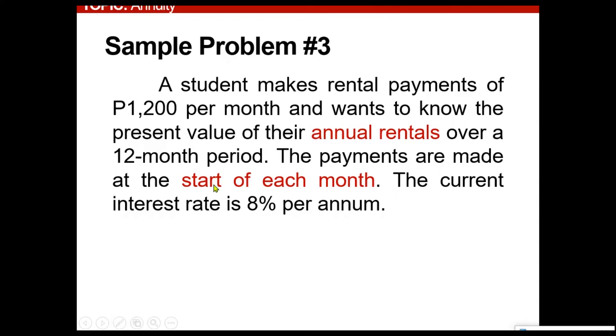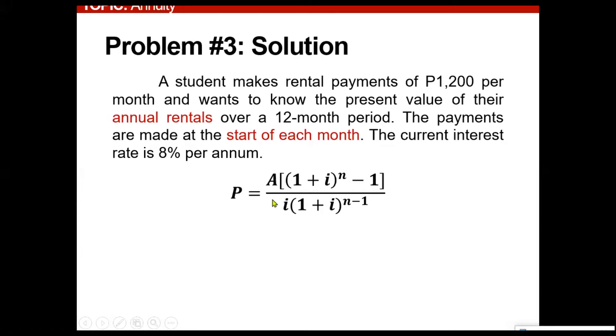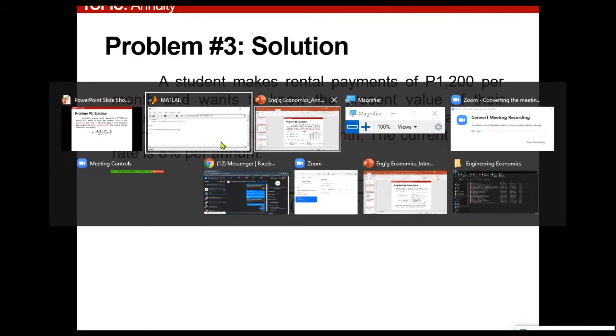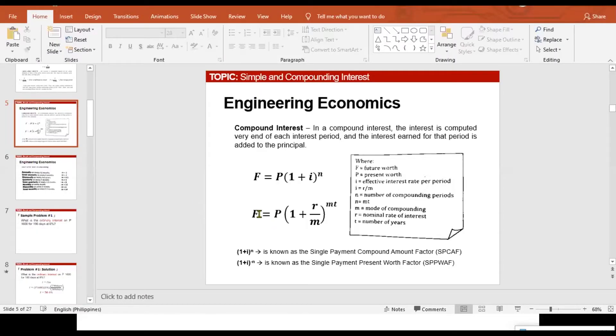Based from this statement, start of each month, this is the concept under annuity due. This one is a formula under annuity due, directly substituting what we have. However, on this problem, you will notice that upon substitution, the interest is under a 12-month period and then you have paid monthly. That entails a monthly payment, a mode of compounding of monthly, and the rate of interest is per annum. With that being said, we will be utilizing the following concept under compounding interest.